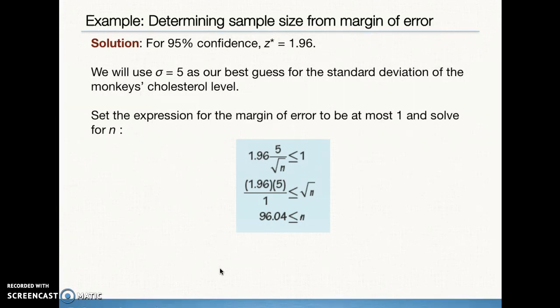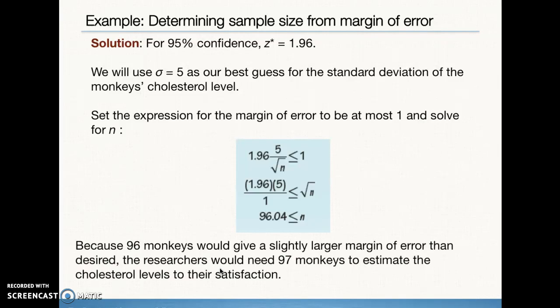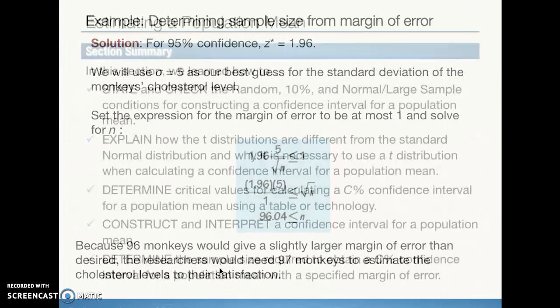In this case, we don't have a sample, so we can't use the sample standard deviation. Instead, they give us a historical standard deviation of 5 from a previous study. So that's the one that's going to be used. Now, if you notice, we end up with a sample size that needs to be greater than or equal to 96.04 when we plug everything in. This means that we need at least 97 monkeys, because that fraction of a monkey means we need to go to the next monkey, whole number monkey, to be able to have the minimum sample size to get the confidence level we need and the margin of error that we are looking for.